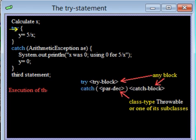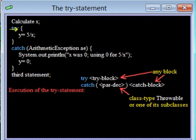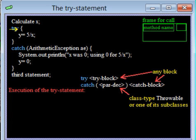Now let's look at execution of a TRY statement. We can assume that this statement occurs in some method that has been called, and that the frame for this call contains variable AE, the parameter of the catch clause.